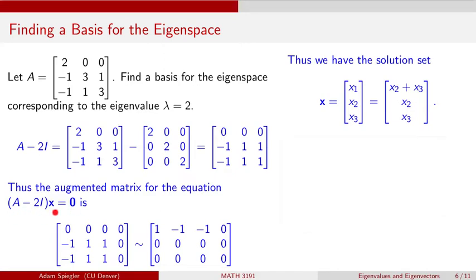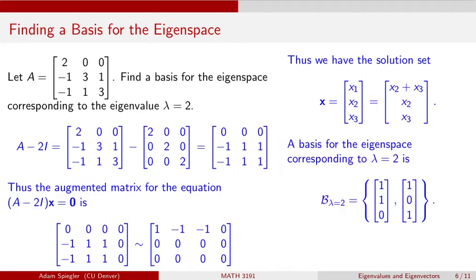When we write out the eigenspace, we describe the set of solutions to this equation. From the augmented matrix, x1 = x2 + x3, with x2 and x3 free. We can rewrite this solution set as the span of the vector (1, 1, 0) — coming from x2 — and the vector (1, 0, 1) — coming from x3. So a basis for the eigenspace corresponding to eigenvalue λ = 2 has dimension 2, spanned by these two vectors obtained from solving (A minus 2I)x = 0.